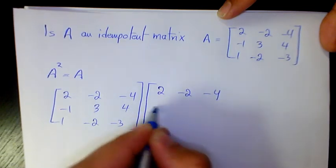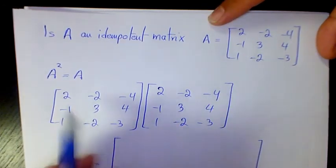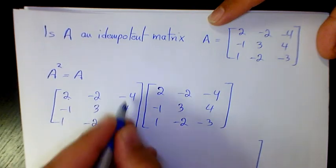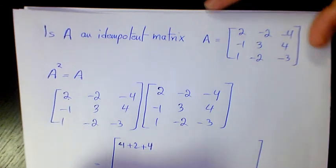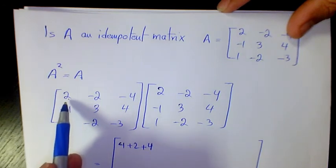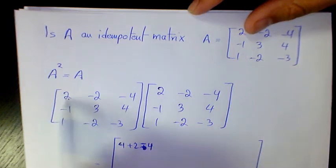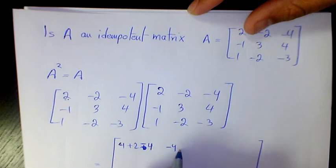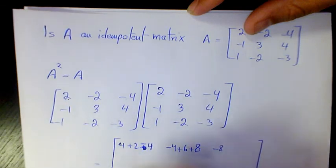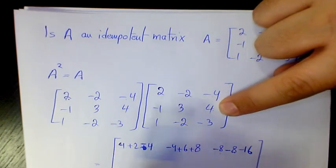Two, negative two, negative four, negative one, three, four, one, negative two, negative three — multiplied by itself. We compute two times two, negative two times negative one, negative four times one. Then two times negative two gives negative four, negative two times three gives negative six, negative four times one gives negative four — giving negative eight minus eight plus twelve, and positive twelve.